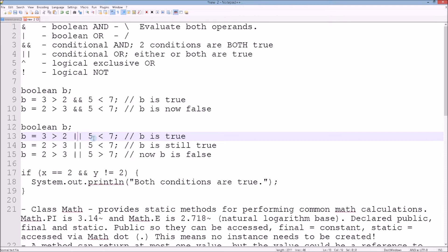On the final line we have 2 is greater than 3, 5 is greater than 7. Now b is false because neither statement is true.